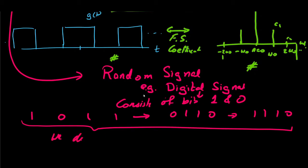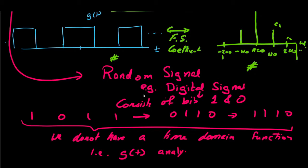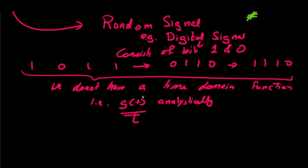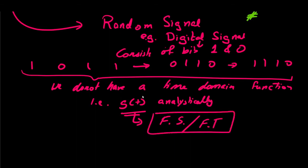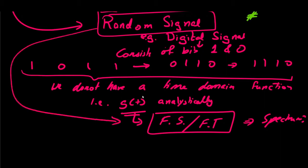we do not have a time domain function. That is we cannot express g of t analytically. Therefore, this g of t cannot have a Fourier analysis. That is Fourier series or Fourier transform. We cannot find a spectrum. For a random signal, taking the Fourier series or Fourier transform directly is not going to solve our problem. That is we are interested in a spectrum of a given signal, we would not be able to solve that.